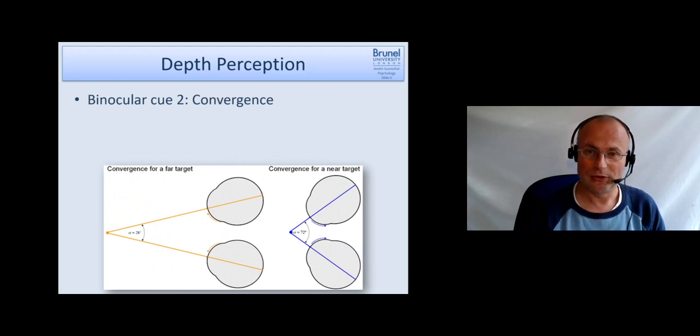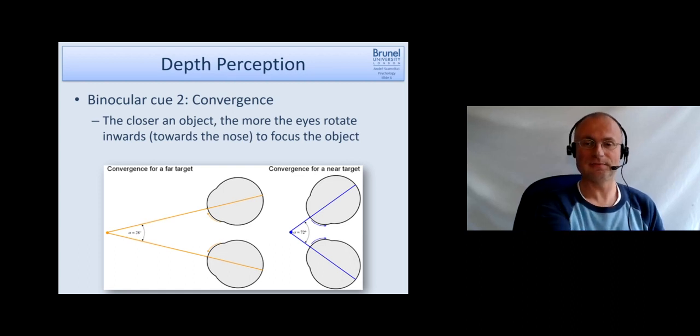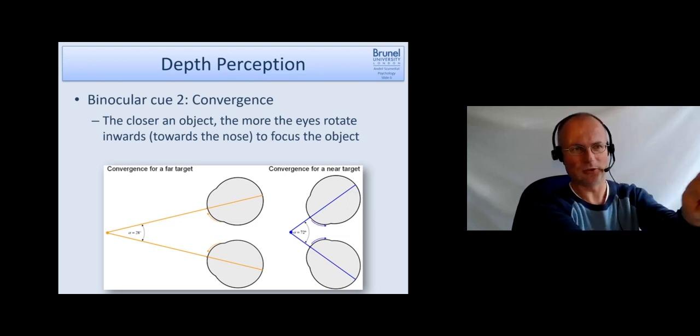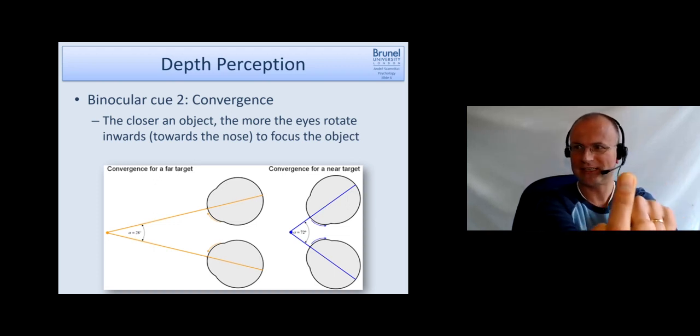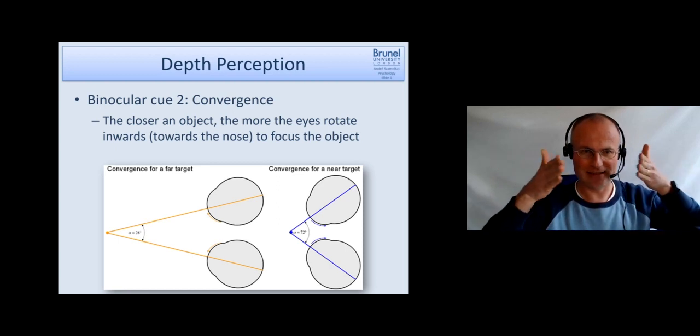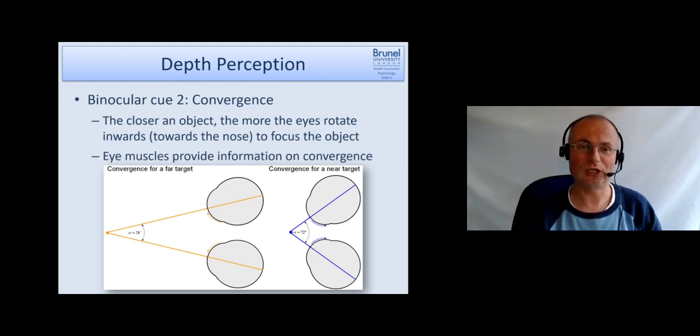Another binocular cue is convergence. Convergence is very simple. If something is far away from us, the eyes have to turn slightly inward to focus on a point. If you move that much closer to your nose, your eyes need to turn more inwards. Our brain has information about the muscles, so we know how the eyes are oriented and we can use this convergence information to infer how far or close apart something is.